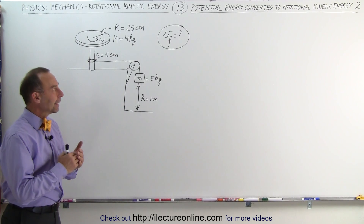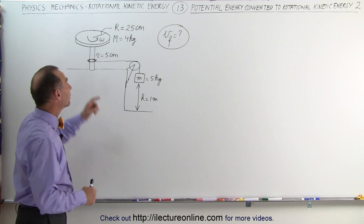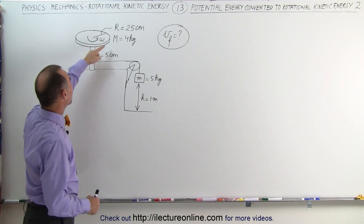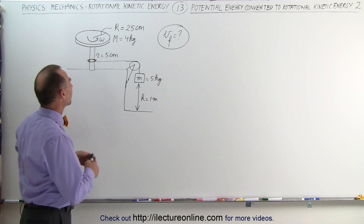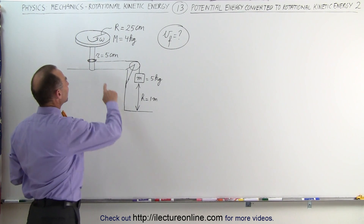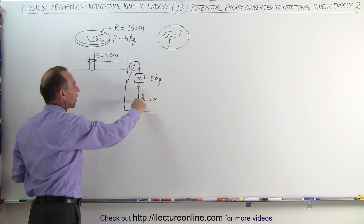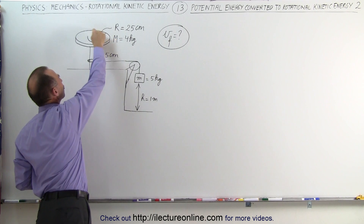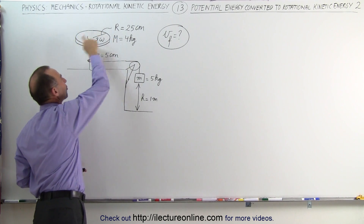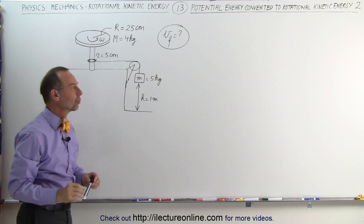Welcome to ElectronLine. Here we have a situation where the disc has a different radius than the attachment on which the string is attached, such that the velocity of the mass as it falls down is not going to be the same as the tangential velocity of the edge of the disc. So we'll have to take that into account.